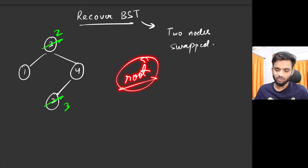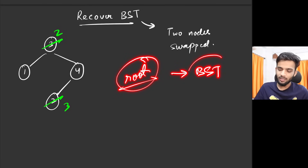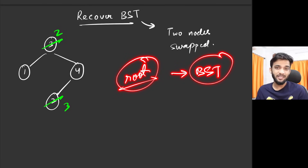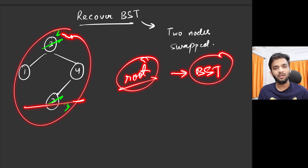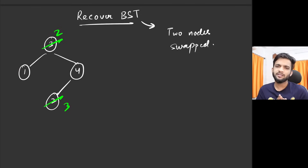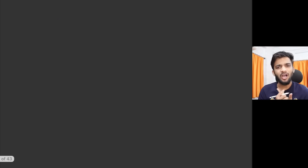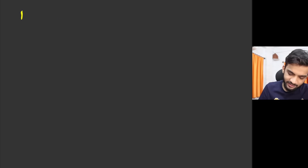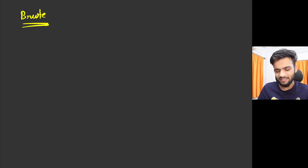The moment I swap their values, this is indeed a valid BST. The question is straightforward: you're given a root representing a BST with two nodes swapped, and you have to correct the BST. You don't need to return it — just correct it by swapping the nodes back.